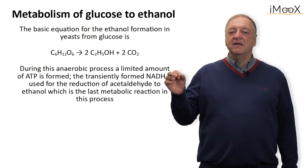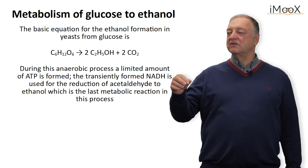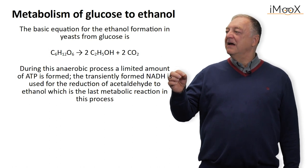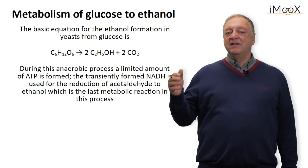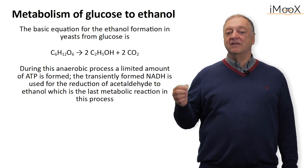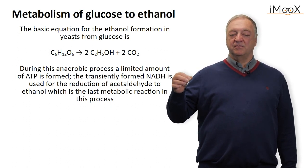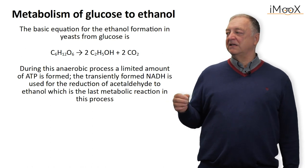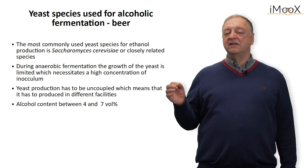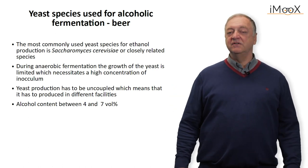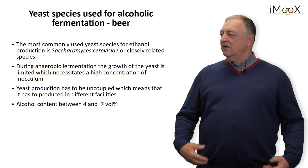The process is anaerobic, and oxygen normally limits alcoholic fermentation and induces growth of the yeast. The growth of the yeast is very limited during alcoholic fermentation, which means we do not produce biomass but mainly produce ethanol. The most commonly used species for ethanol fermentation in foods is Saccharomyces cerevisiae or very closely related species.